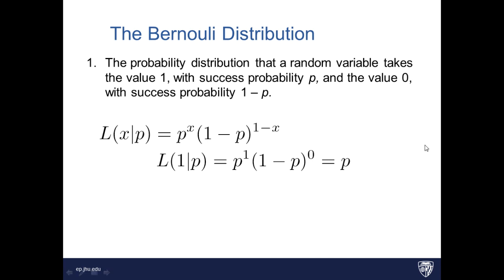So if I say the likelihood of observing a one, given probability p, well, we're going to put one in for x, and you'll see that p raised to the first power is just p. This term raised to the zero power is one, so p times one is p.